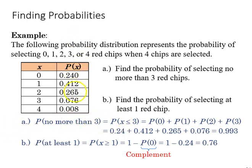So we would just add together those probabilities, or at least one red chip would be this 0.76, where we subtract zero from any of the other possibilities. So 1 minus 0.24 gives us 0.76.